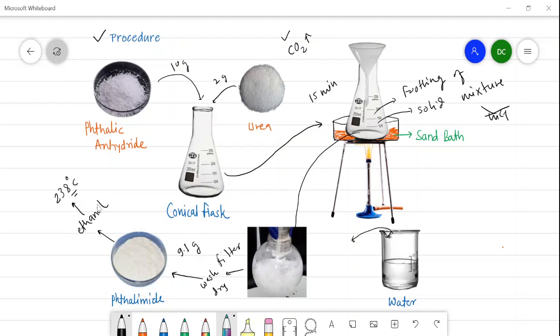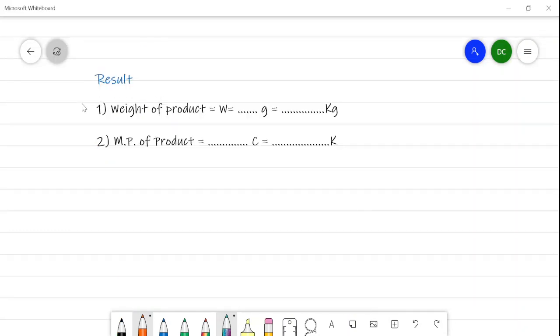Now we will see the result of this practical or preparation. In the result we have to write the weight of the product and the melting point of the product. Weight of the product is 9.1 gram, and it is 9.1 × 10^-3 kg. Whereas the melting point of the product that we have taken is 238 degrees Celsius, and in kelvin it is 511 kelvin.